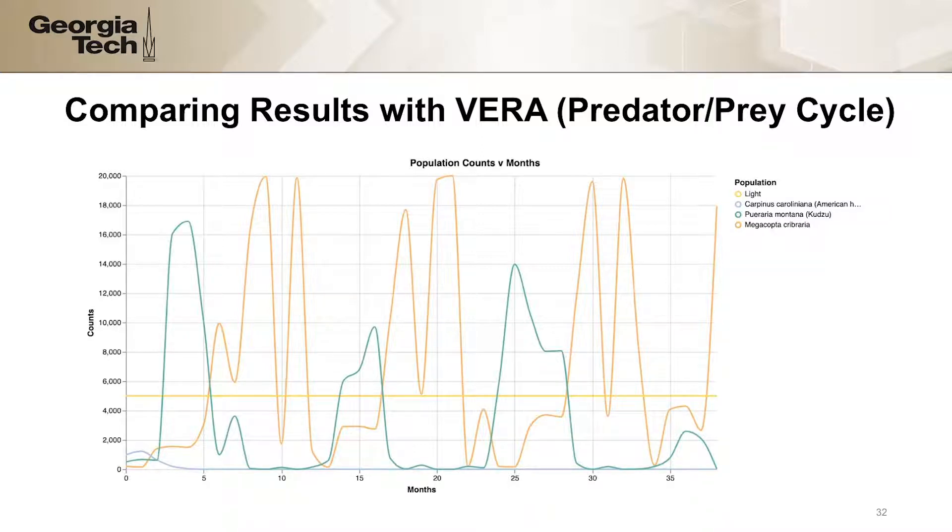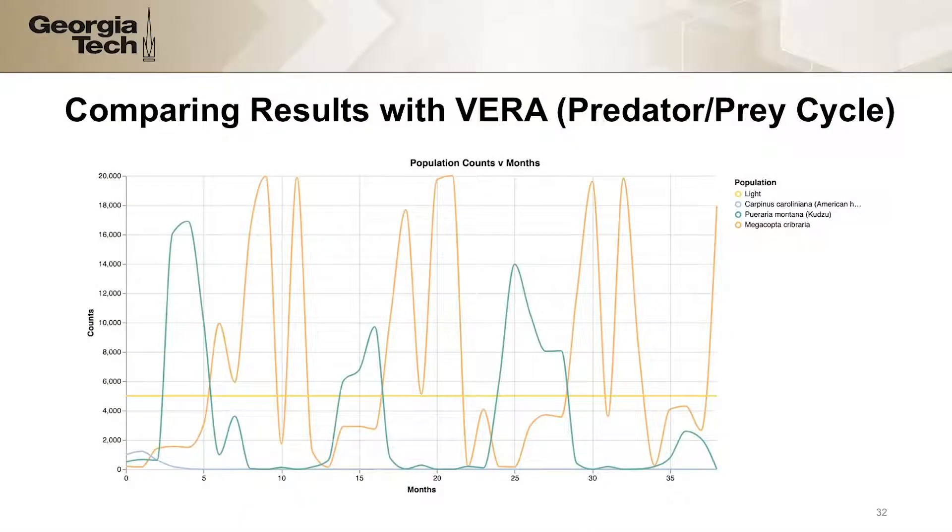The predator in this case, the kudzu bug, eats the prey, kudzu. Because the predator takes a little bit of time to digest and incorporate some of the nutrients from the kudzu into its body, you get this kind of cyclical hump and then another hump. This is a classic example of a predator-prey cycle that we can see here.